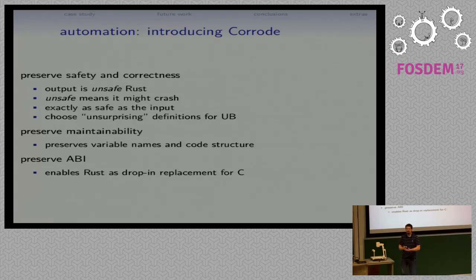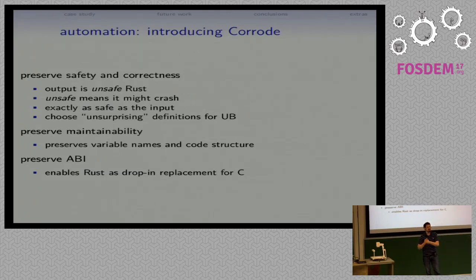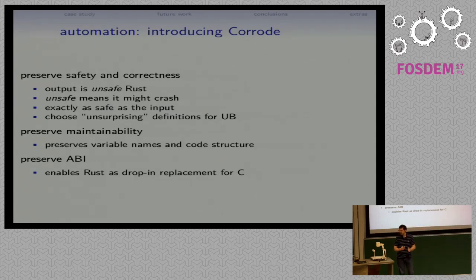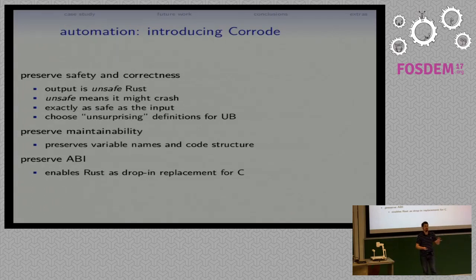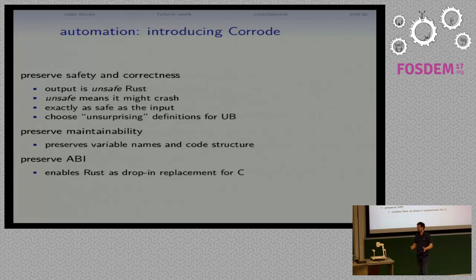Finally, Corrode aims to preserve ABI. So if you run Corrode on a piece of C source, the output Rust should still link against other C code that the original C code was able to link against — it should be compatible at the level of binary linking. All of these together enable, ideally, Corrode to be used as a way of making Rust a drop-in replacement for as much or as little of the existing C source that you're starting with.